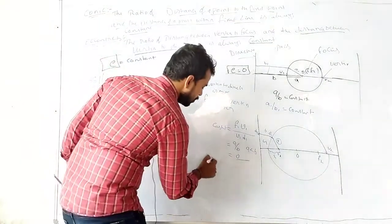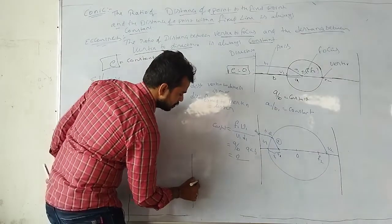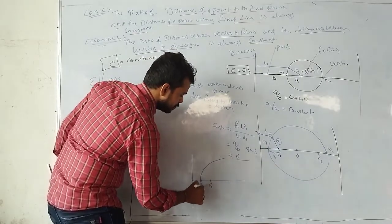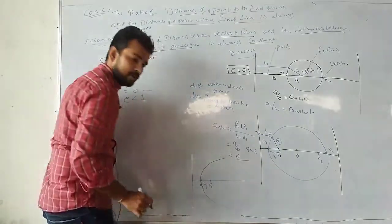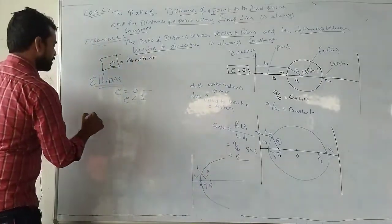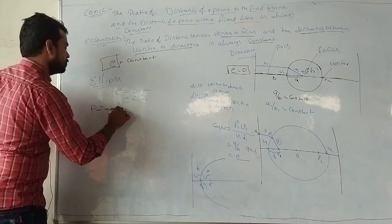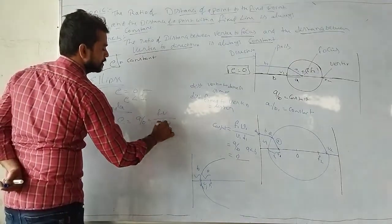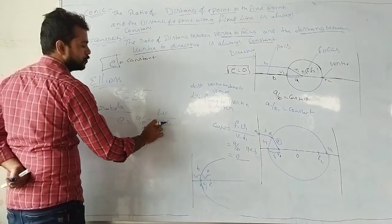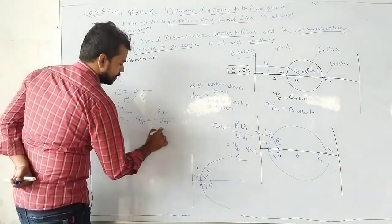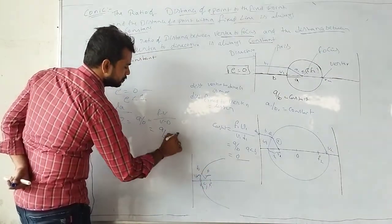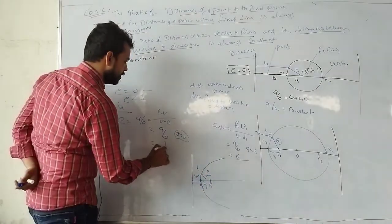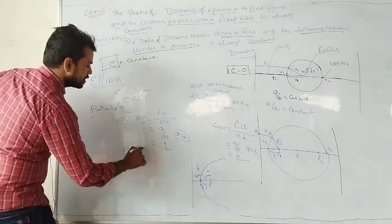For parabola, E formula is same: E equals A/B, the ratio of distance from vertex to focus and vertex to directrix. But here the distance A equals B — vertex to focus equals vertex to directrix. So E equals 1. For parabola, E is equal to 1.